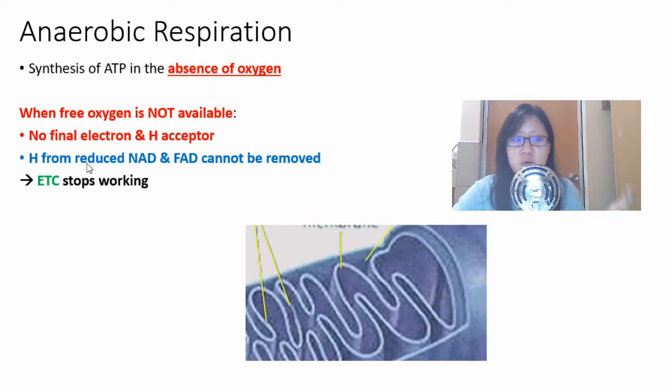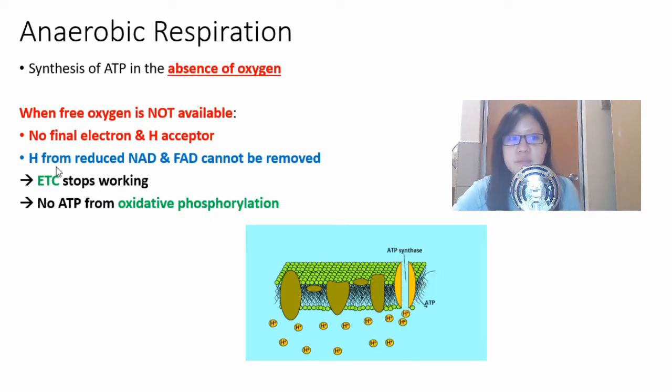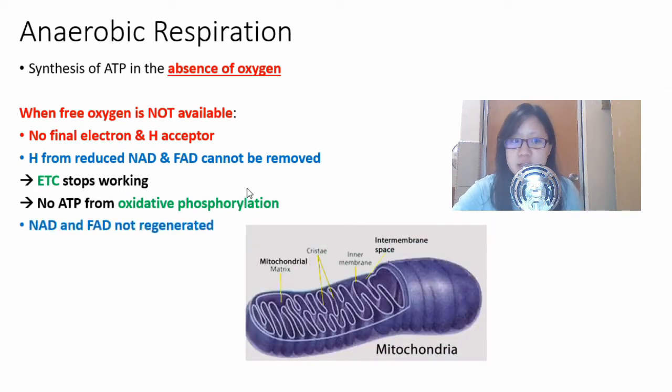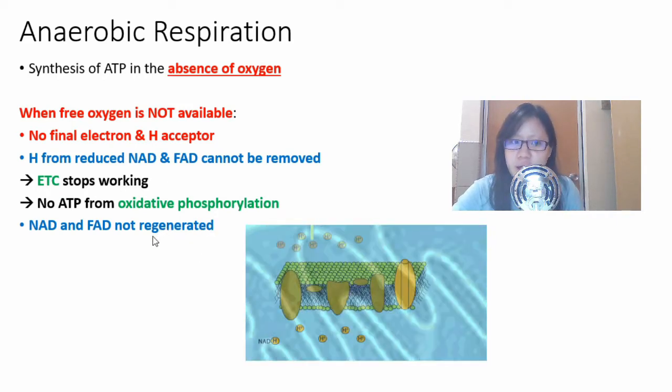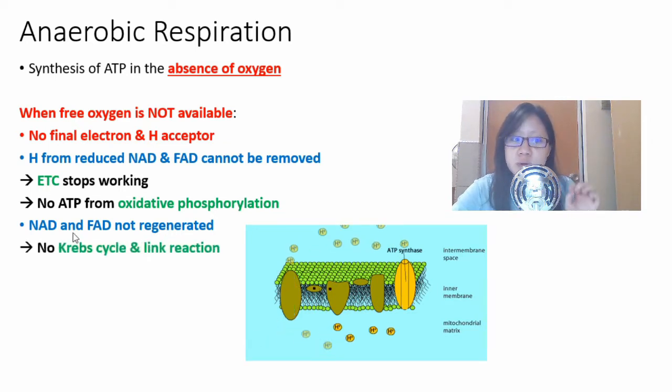The hydrogen from the reduced NAD and FAD cannot be removed. There is no ATP formed from oxidative phosphorylation. But it doesn't stop there. Because reduced NAD and FAD cannot become oxidized, or in other words, NAD and FAD are not regenerated. This means that there is no NAD and FAD for the Krebs cycle and the link reaction.